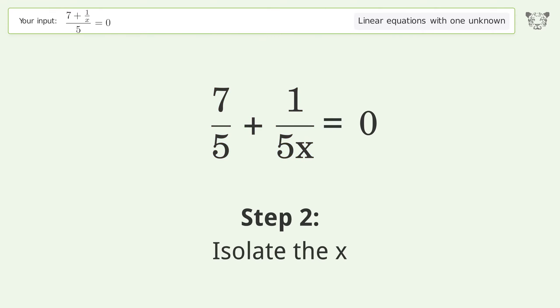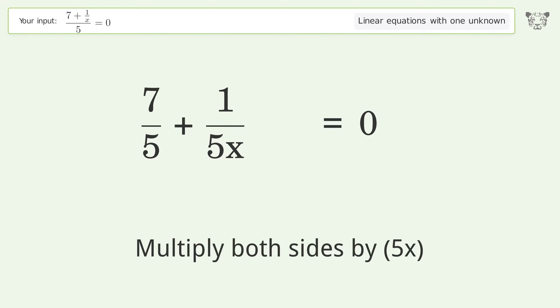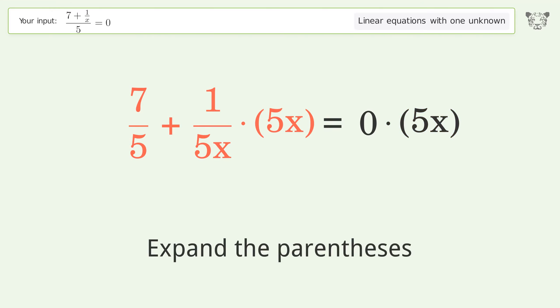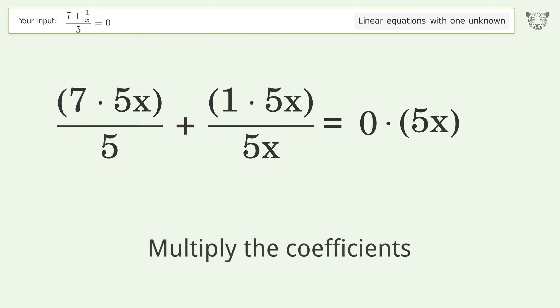Isolate the x. Multiply both sides by 5x. Expand the parentheses. Multiply the coefficients.